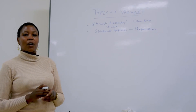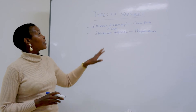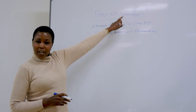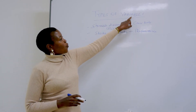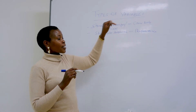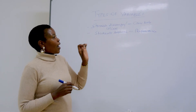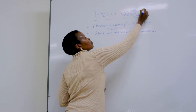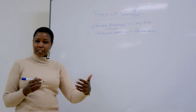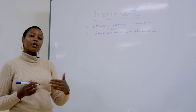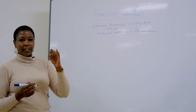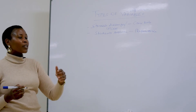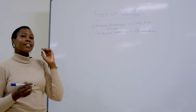Welcome to this lesson where we are going to answer questions regarding types of variables. When we talk about a variable, we have said that a variable is a measurable characteristic. It is measurable and assumes different values across objects. So for a concept to be called a variable, it must vary — variation is key. It must assume different values across the object. It is measurable and it is observable.